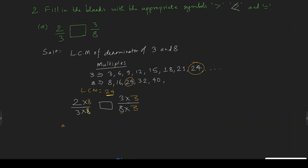Three times eight equals 24, so two times eight equals sixteen. Therefore, 2/3 equals 16/24. For 3/8, three times three equals nine, and eight times three equals twenty-four.